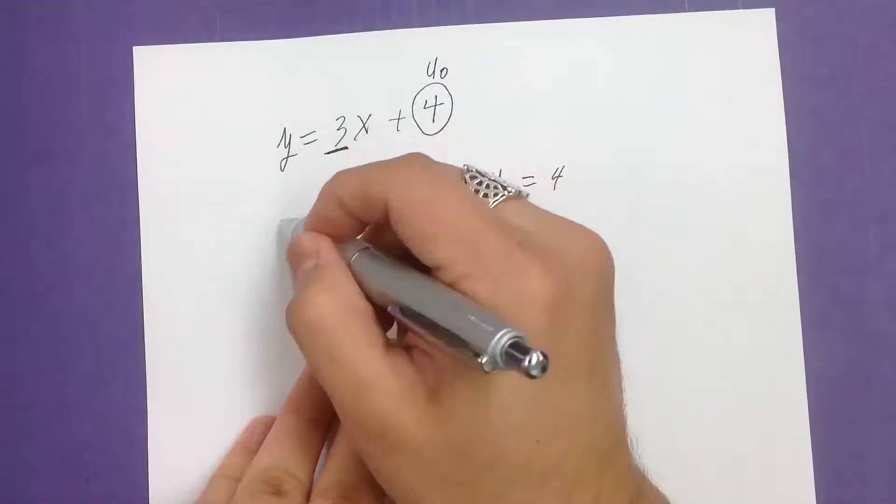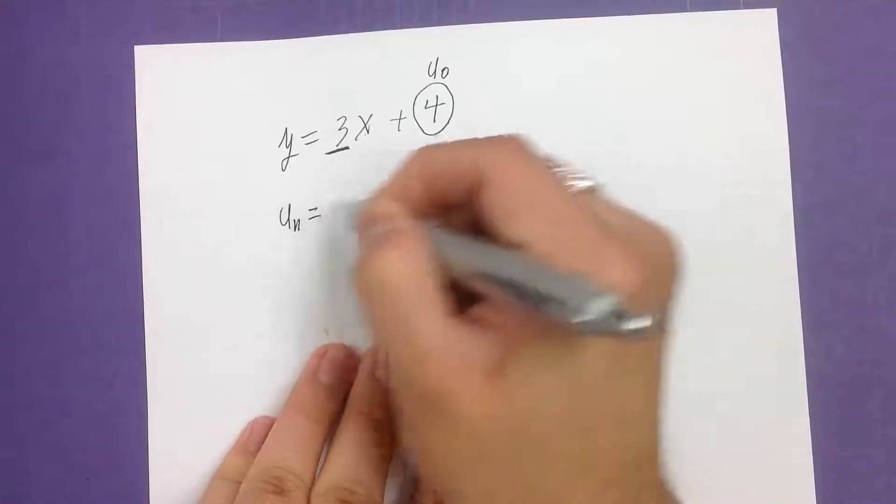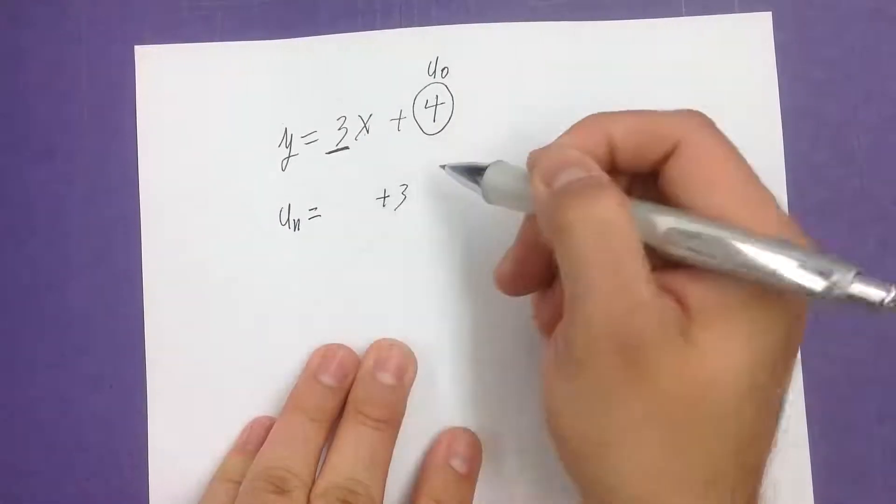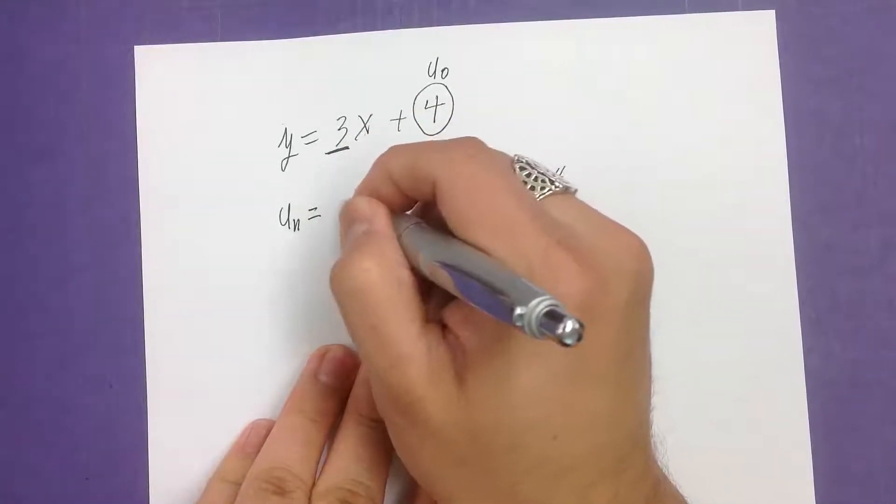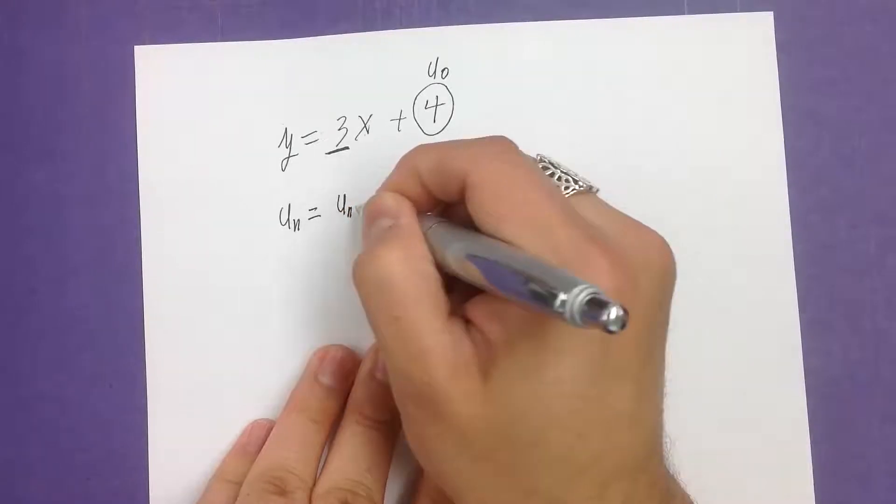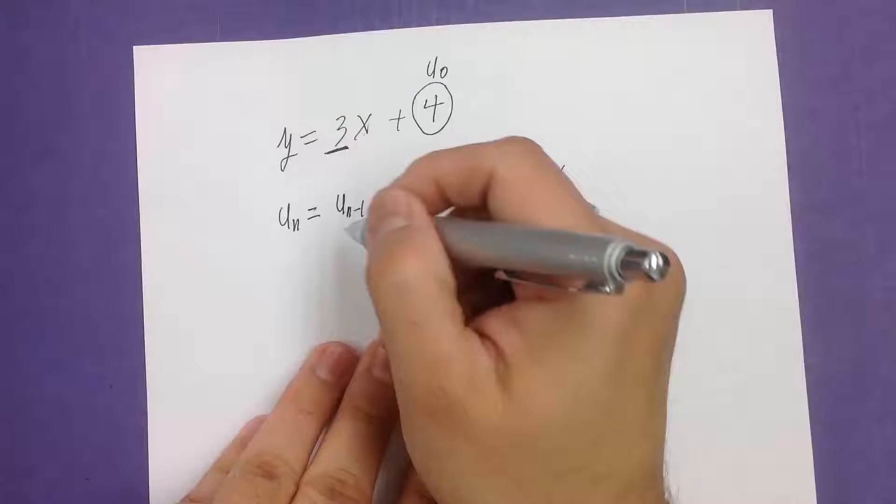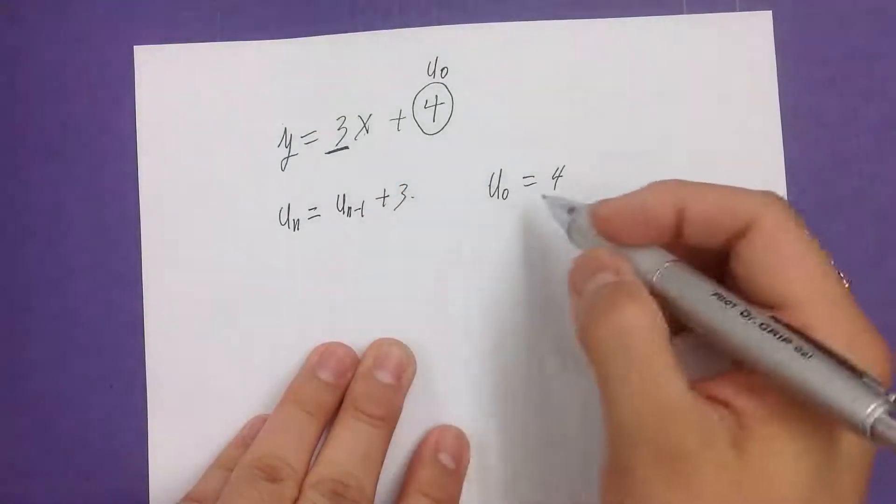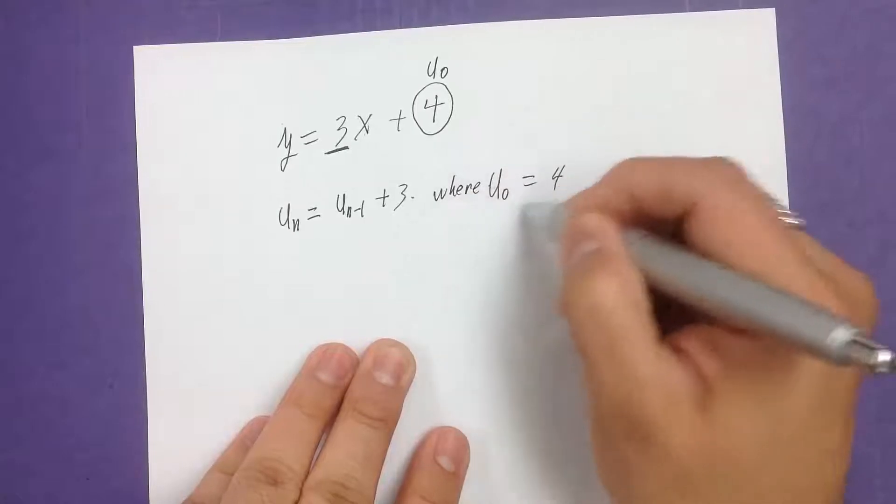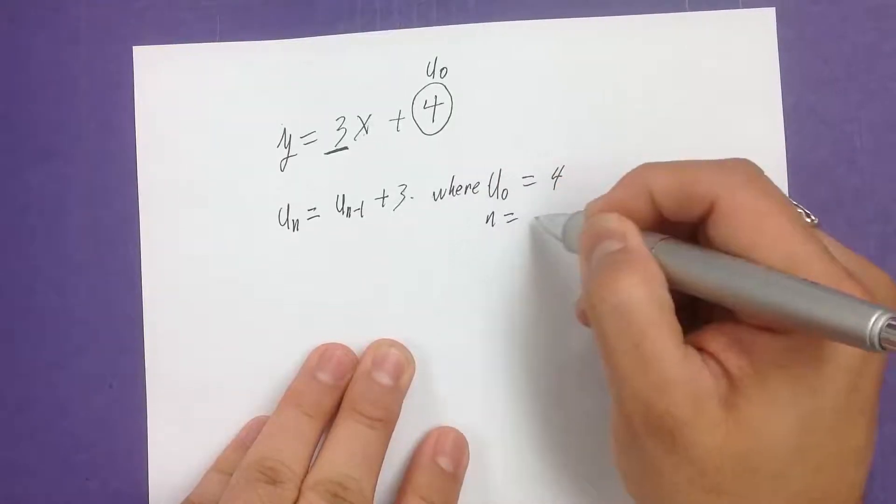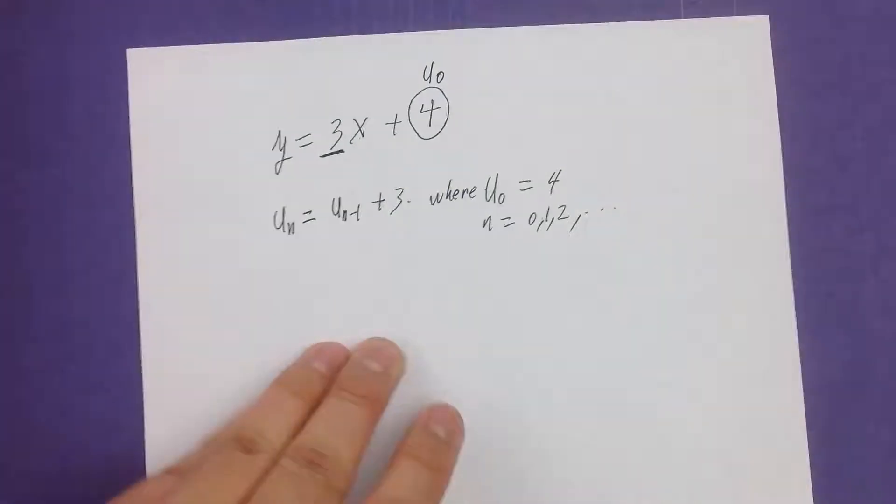Since we're multiplying by 3, it's like saying we're adding 3 each and every time. So u sub n is equal to plus 3, and then we have whatever right here. So that would be u sub n minus 1, because whatever was in the previous part of the sequence, we're going to be adding 3 to it. And we're starting out with 4. And n is equal to 0, 1, 2, so on and so forth.